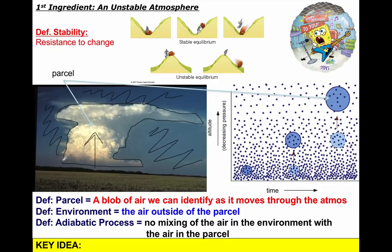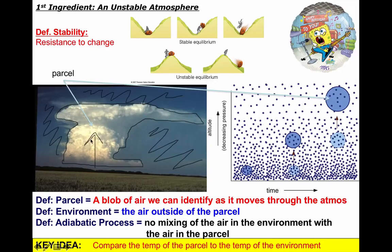Our goal is to understand this key idea: how do we compare what happens inside the parcel to outside? If a parcel behaves as an adiabatic process, it doesn't mix with its environment. For example, this parcel of air has nine molecules in it. With time, as it ascends, the same nine air molecules are inside of it — they will obey the first law of thermodynamics.